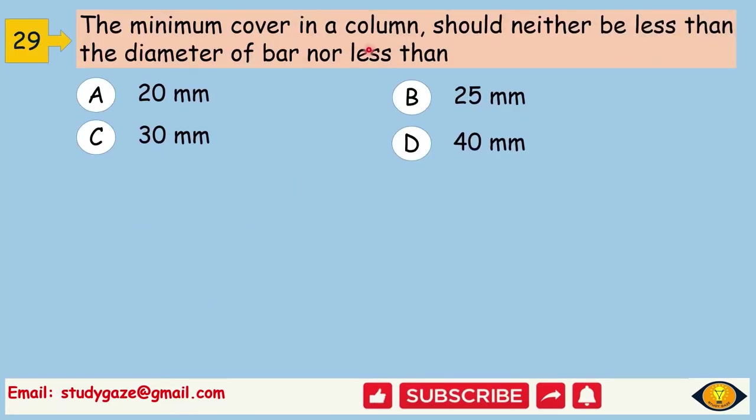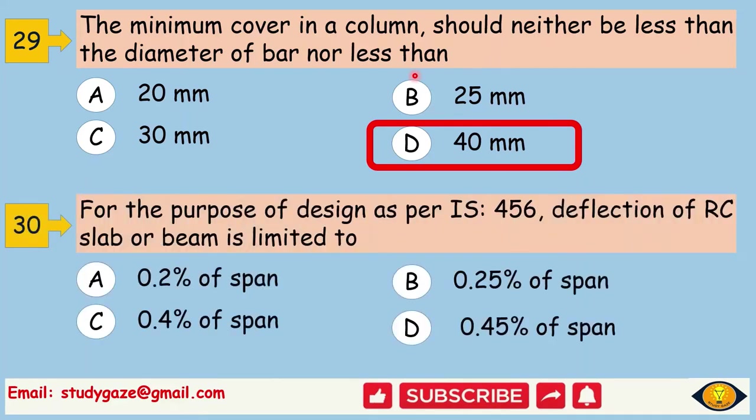The minimum cover in a column should neither be less than the diameter of bar nor less than. Answer is 40 mm. For the purpose of design as per IS 456, deflection of RC slab or beam is limited to. Answer is 0.2% of span.